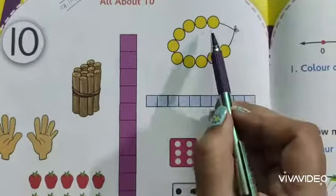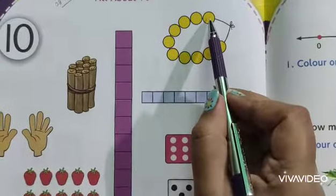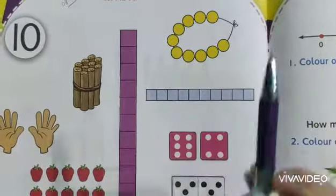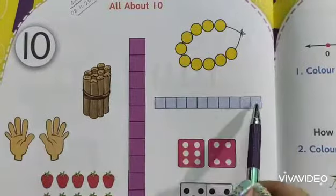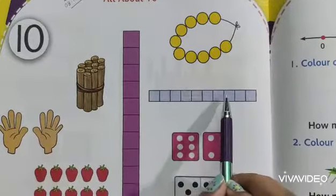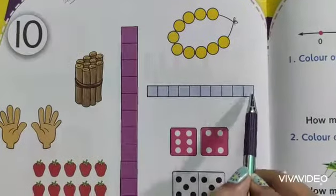Next this right side. How many beads are there? 1, 2, 3, 4, 5, 6, 7, 8, 9, 10. Then some boxes. 1, 2, 3, 4, 5, 6, 7, 8, 9, 10. This is also 10.